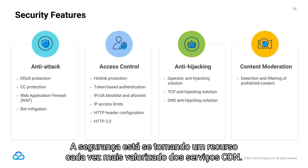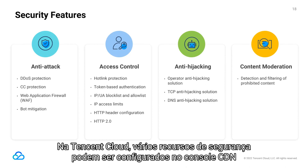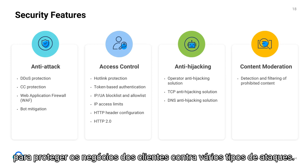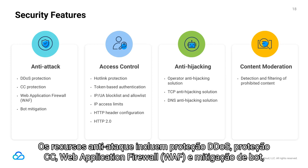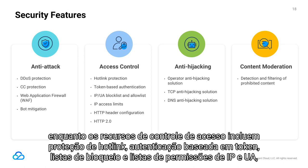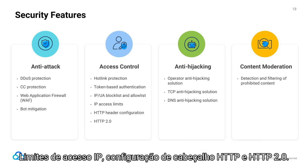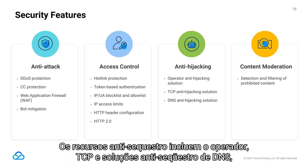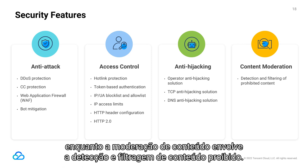Security is becoming an increasingly valued feature of CDN services. At Tencent Cloud, various security features can be configured on the CDN console to protect customers' businesses. Anti-attack features include DDoS protection, CC protection, web application firewall (WAF), and bot mitigation. Access control features include hotlink protection, token-based authentication, IP and UA block lists and allow lists, IP access limits, HTTP header configuration, and HTTP 2.0. Anti-hijacking features include operator, TCP, and DNS anti-hijacking solutions, while content moderation involves detecting and filtering prohibited content.